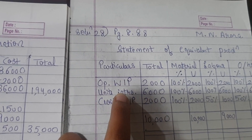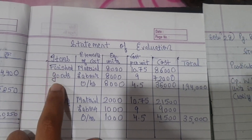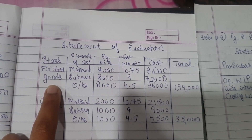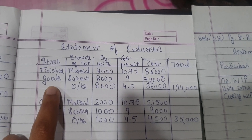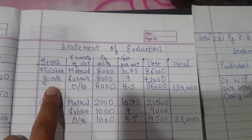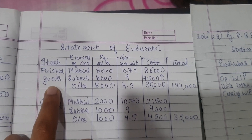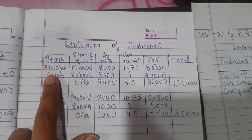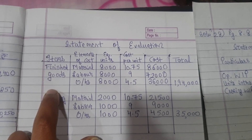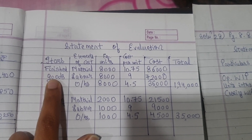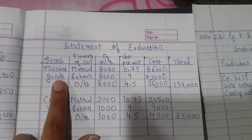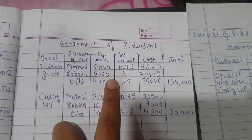Opening WIP and units introduced - instead of writing them separately, I wrote finished goods combining both, because it doesn't make any difference whether I write opening WIP and units introduced separately or write them combined as finished goods - it is the same thing. So I wrote finished goods here, combining both.